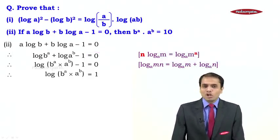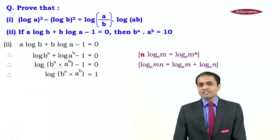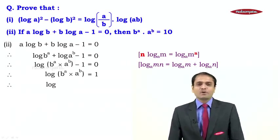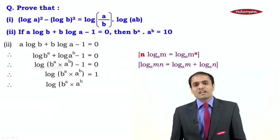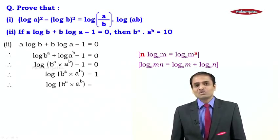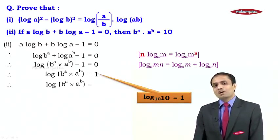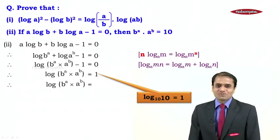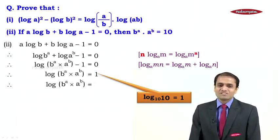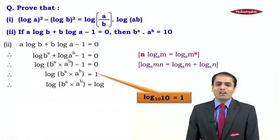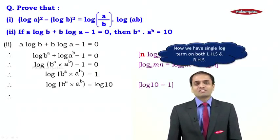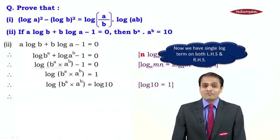Since log base 10 of 10 equals 1, we replace the 1 on the RHS with log 10. The reason given is: log 10 = 1. So now the equation becomes log(b^a · a^b) = log 10, and we have a single log on both sides.